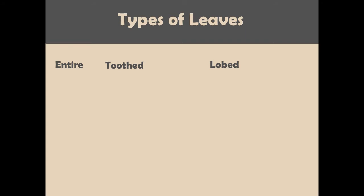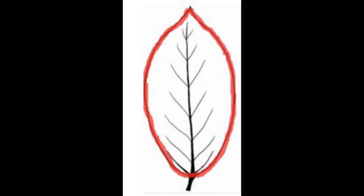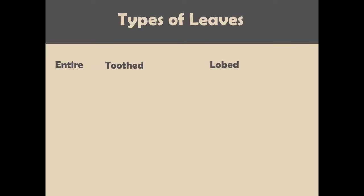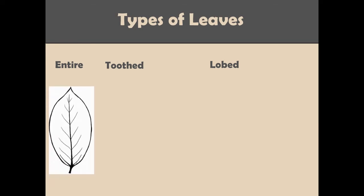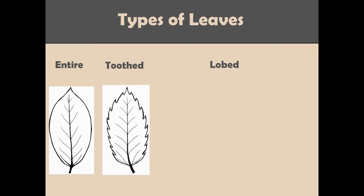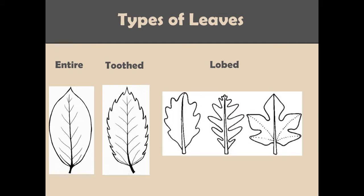To determine whether a type of leaf is entire, toothed, or lobed, you need to look at the leaf margin. The leaf margin is the edge of a leaf. If the margin of a leaf is unbroken, then the leaf is called entire. If the margin has regular, shallow indentations, then the leaf is called toothed. Toothed leaves can have wavy or scalloped edges or edges with pointed teeth like this one here. If the indentations are deeper and separate the leaves into sections, the leaf is termed lobed.